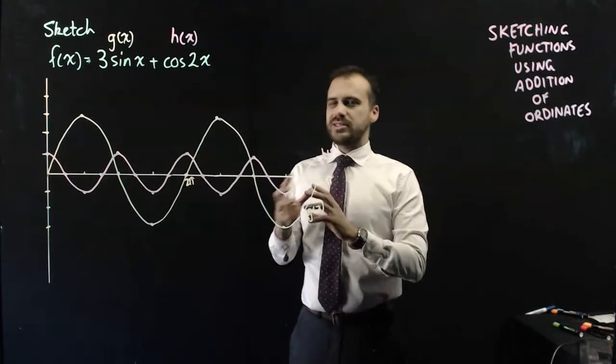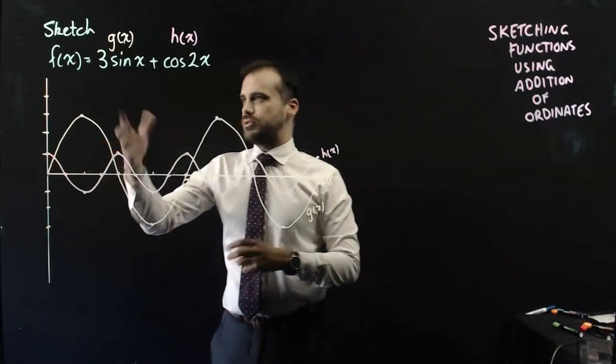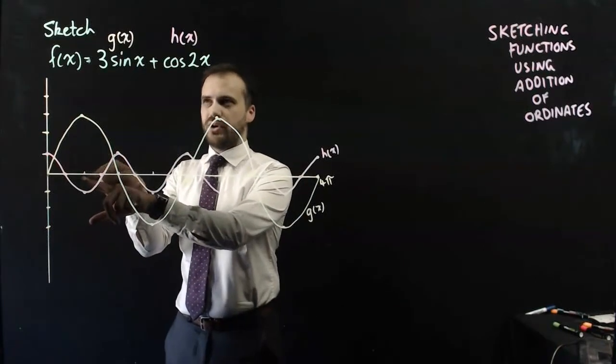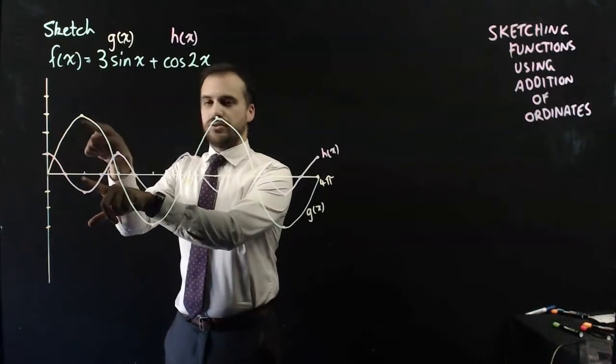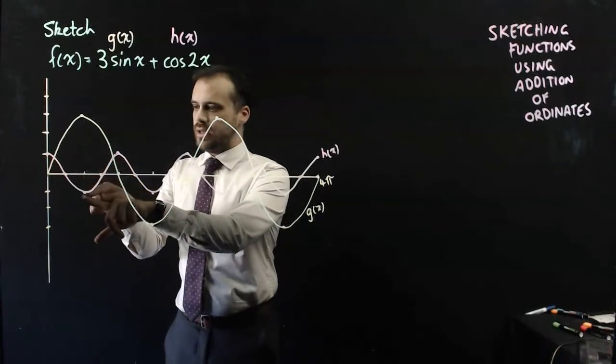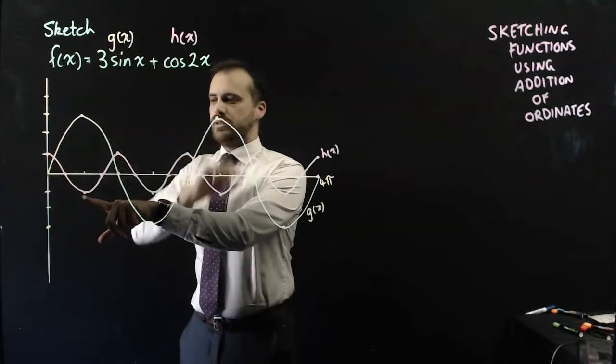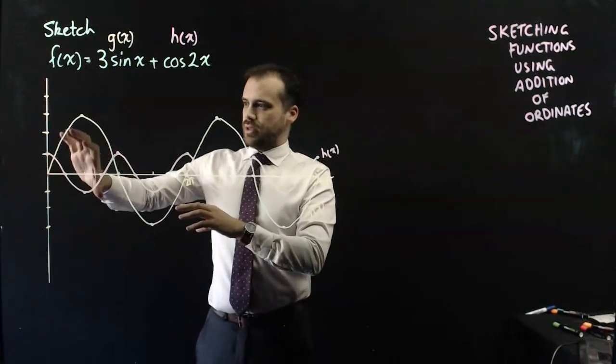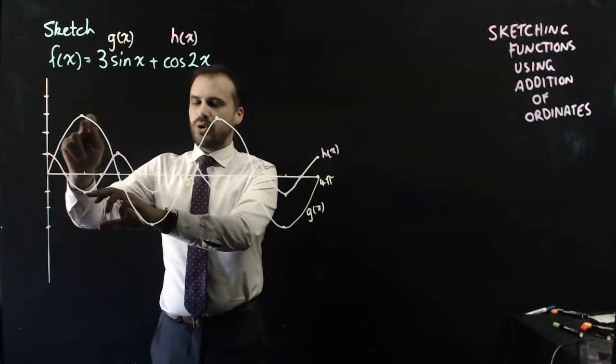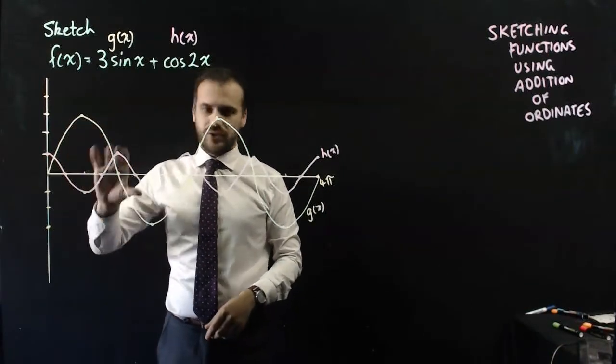So what about sketching g(x) + h(x)? Well, if we sub x into, say, if we sub, say, this value here, which is π/2, into g(x), we get 3. If we sub π/2 into cos(2x), we get -1. So we can sketch the function 3sin(x) + cos(2x) by just adding the y coordinates of these, adding the ordinates. In this case, the y coordinates of these two functions.